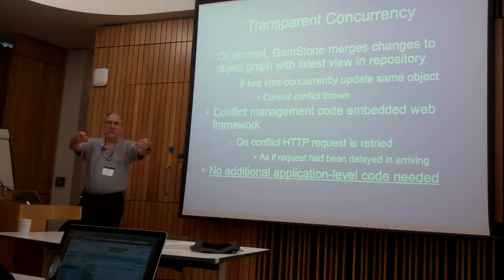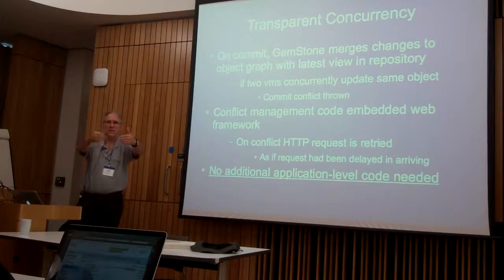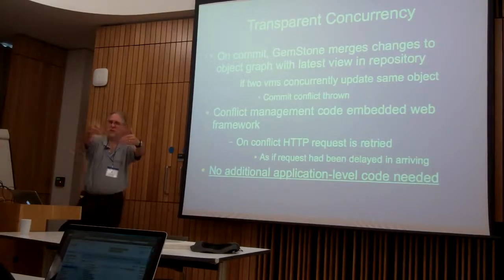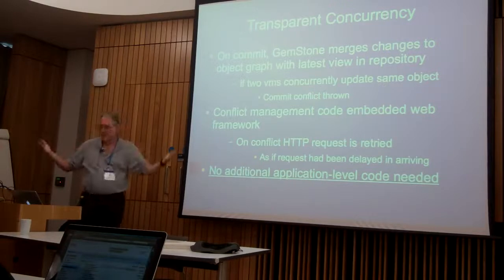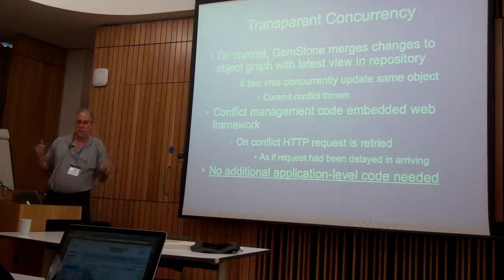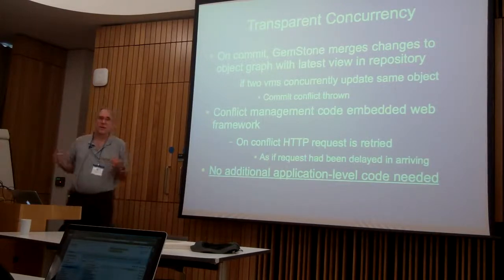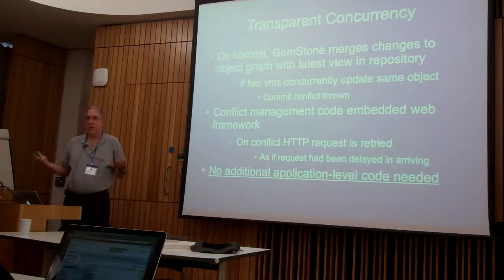They're both trying to buy shoes or something like that, and they both buy the same shoe out of the list. A commit conflict will occur for the second one in. Instead of having special logic to say let's try again, we just abort, restart the HTTP request, and process it again. If the last shoe was sold, your logic says no shoes available. So you can have this conflict detection transparently without any application changes.